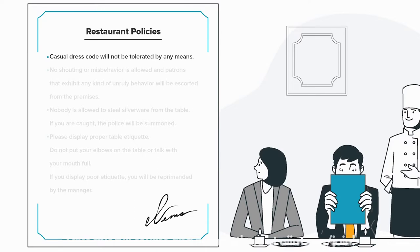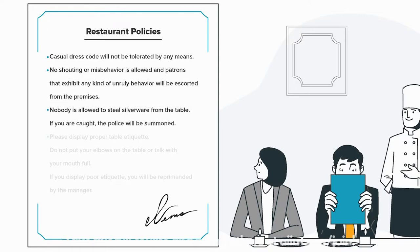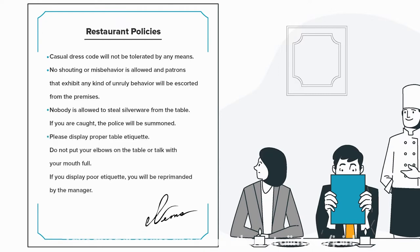1. Casual dress code will not be tolerated by any means. 2. No shouting or misbehaviour is allowed, and patrons that exhibit any kind of unruly behaviour will be escorted from the premises. 3. Nobody is allowed to steal silverware from the table. If you are caught, the police will be summoned. 4. Please display proper table etiquette — do not put your elbows on the table or talk with your mouth full.